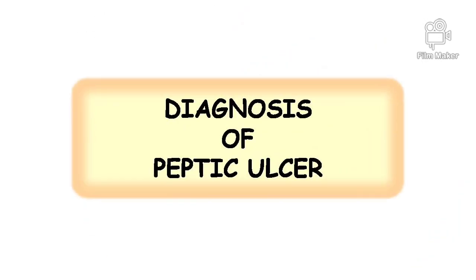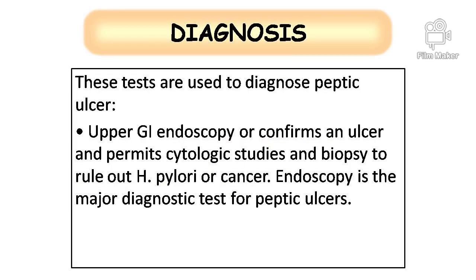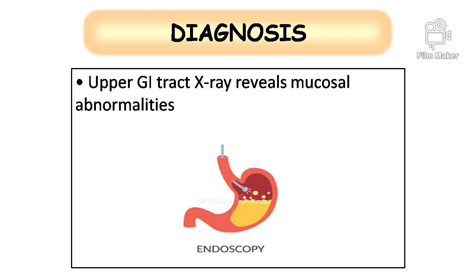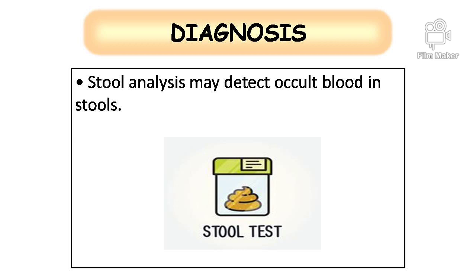Diagnosis of peptic ulcer: upper GI endoscopy confirms an ulcer and permits cytologic studies and biopsy to rule out H. pylori or cancer. Endoscopy is the major diagnostic test for peptic ulcers. Upper GI tract X-ray reveals mucosal abnormalities. Stool analysis may detect occult blood in stools.